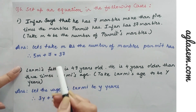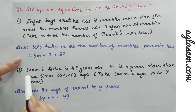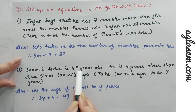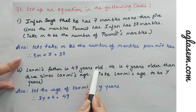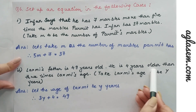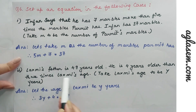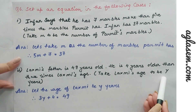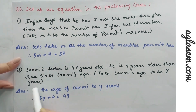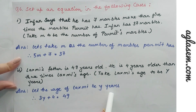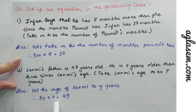Second case: Lakshmi's father is 49 years old; he is 4 years older than 3 times Lakshmi's age. Taking Lakshmi's age to be y years, the equation would be 3y + 4 = 49.